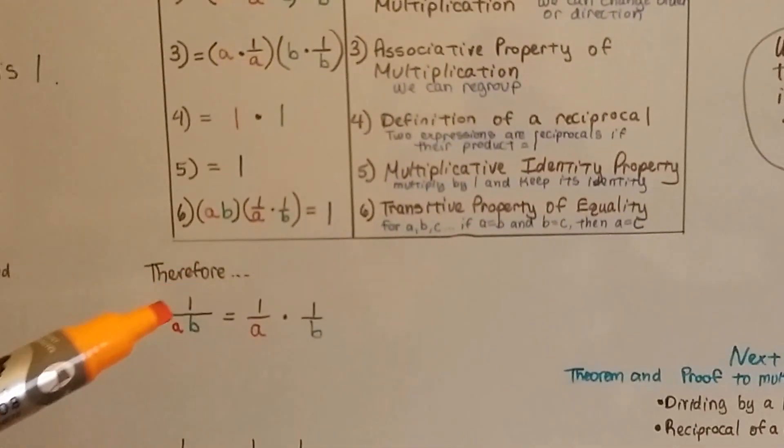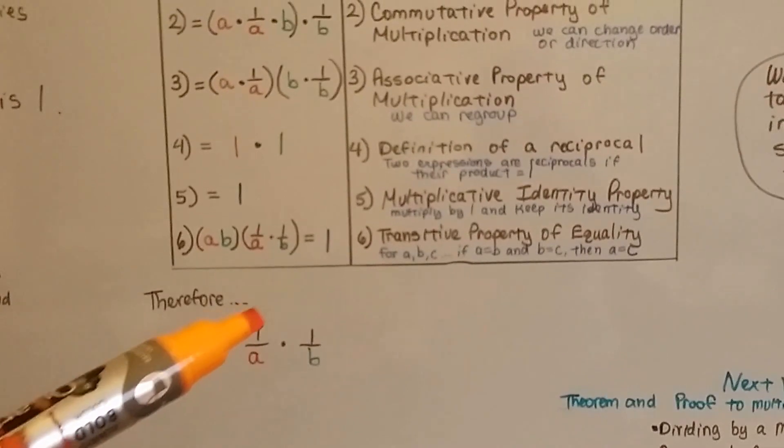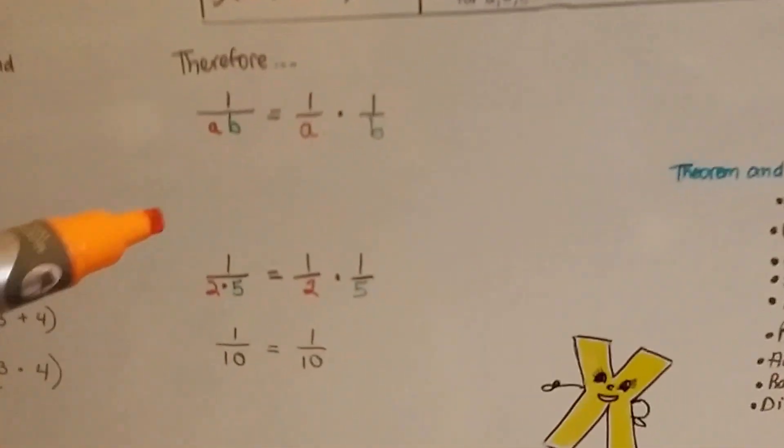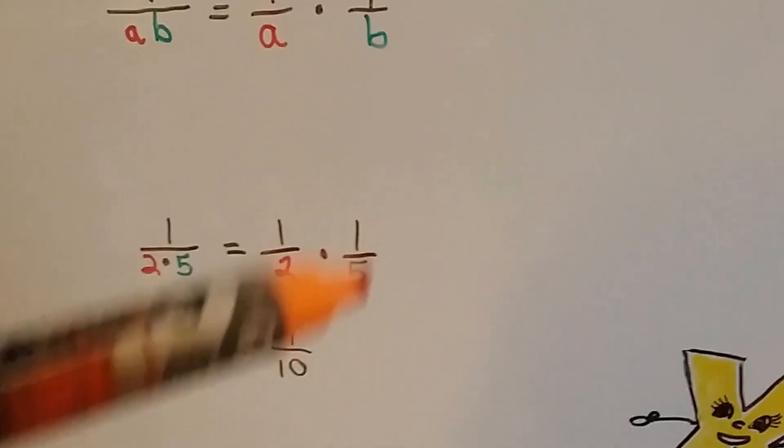Therefore, 1 over ab, 1 over a times b is equal to 1 over a times 1 over b.